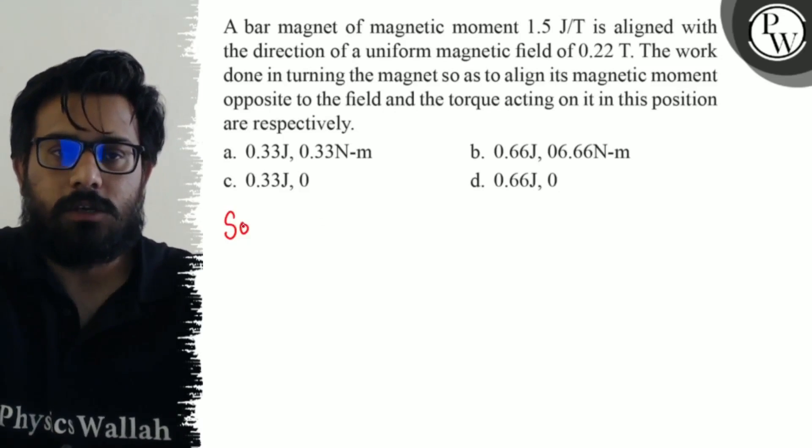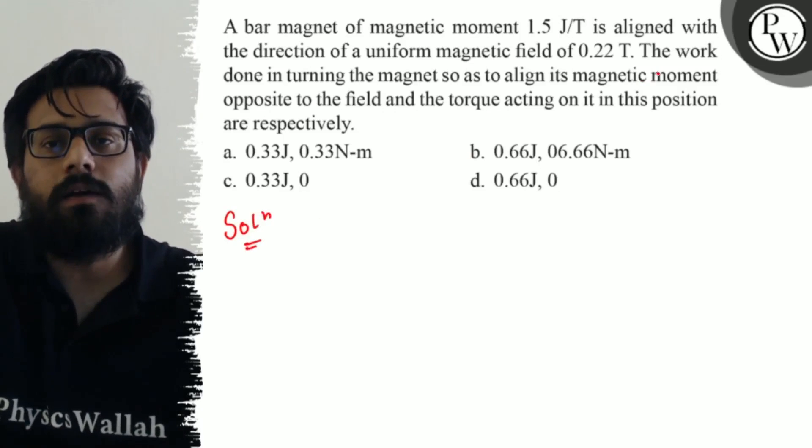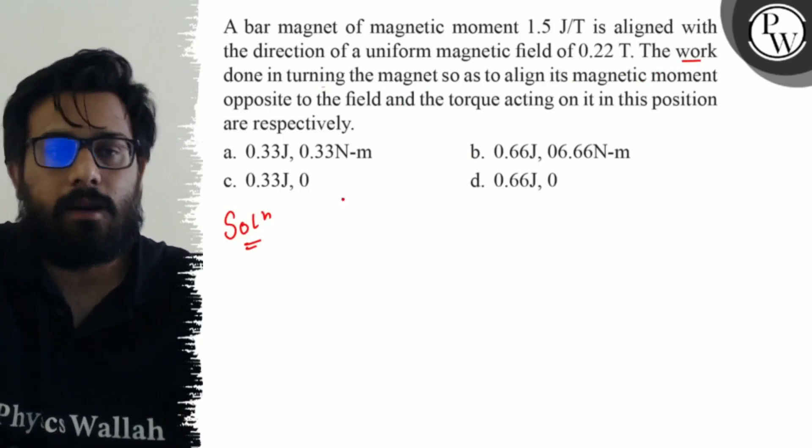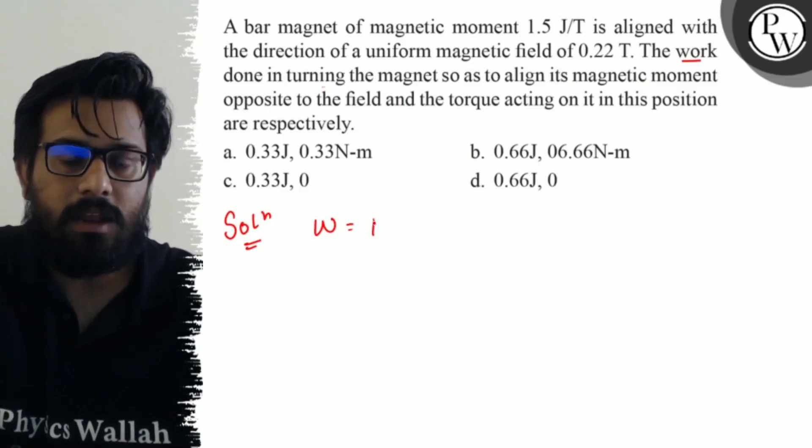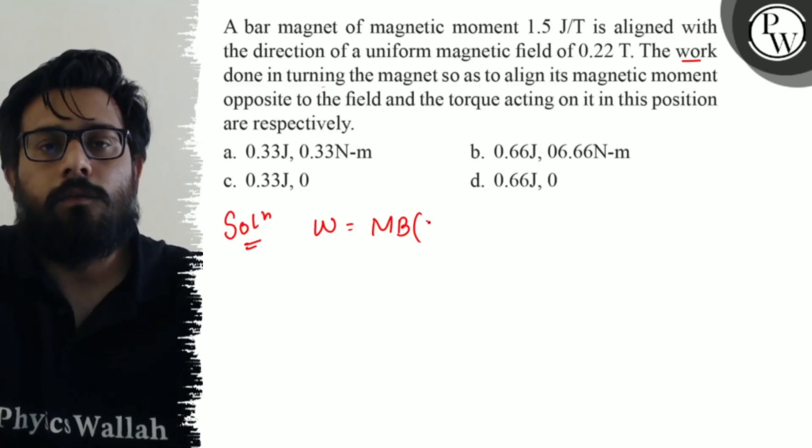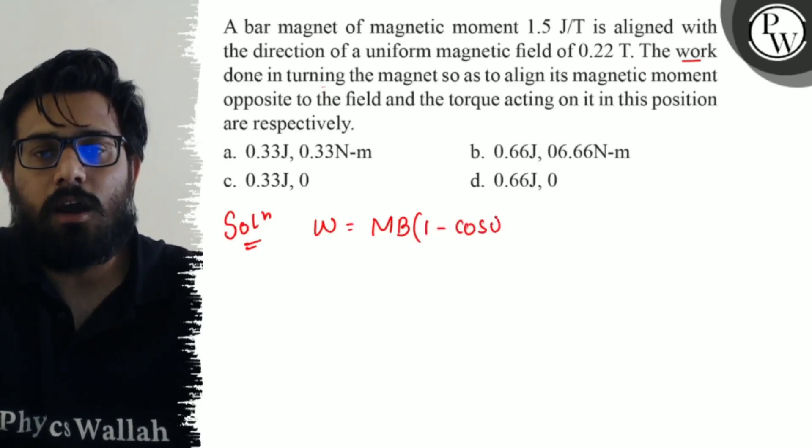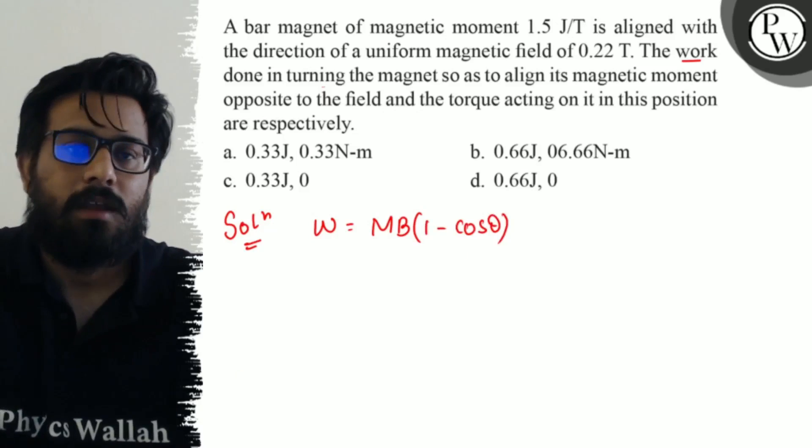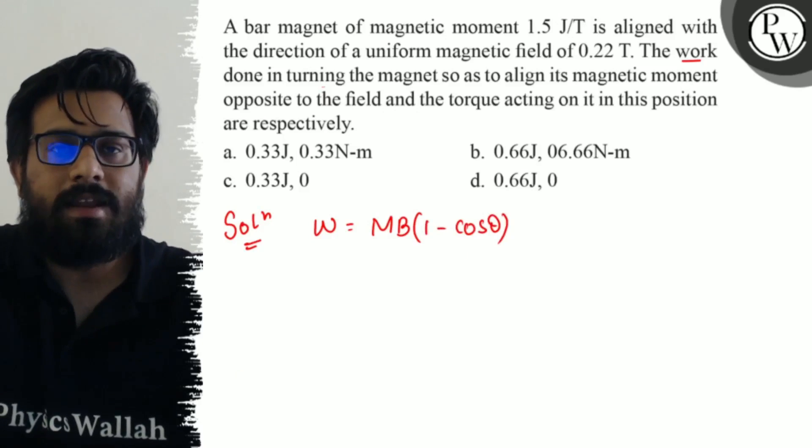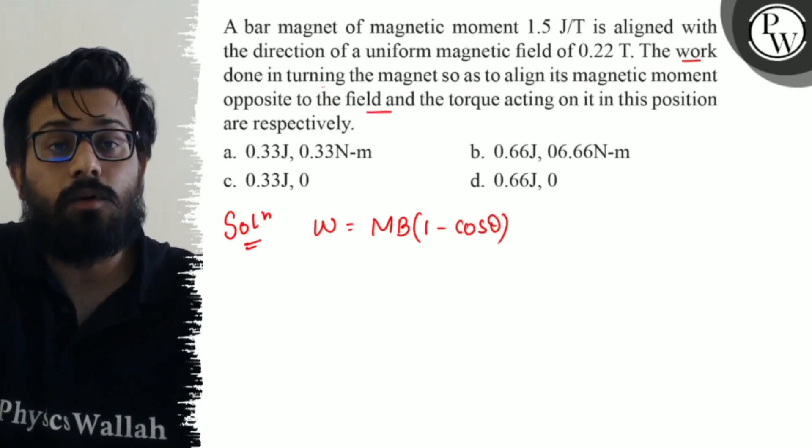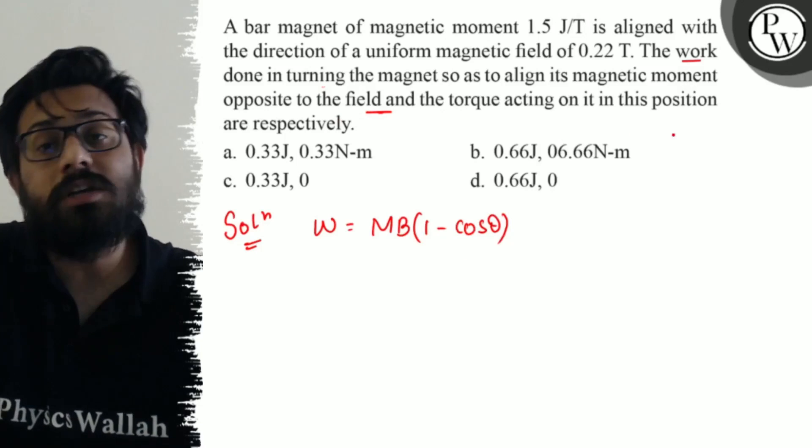So here in this question, you have to calculate the work done in turning the magnet. Since we know the formula of the work done is equal to MB times 1 minus cos theta. We have to just align the magnetic field opposite to the field. So we have to align it opposite to the field.